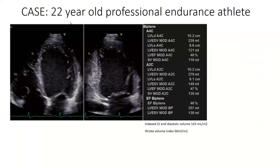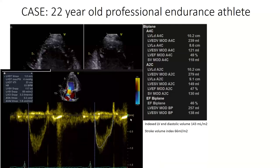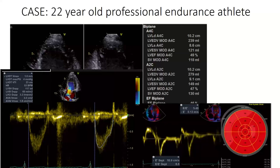If we go back to our case and learn that this 22-year-old is a professional endurance athlete, we can frame the LV dilatation in a different light. We can confirm the same stroke volume by a different method using PW LVOT Doppler — the stroke volume is 60 mls per meter squared, suggesting good tracings. We can then pursue other markers of function, and we see that both tissue velocities as well as strain are indeed normal. So this patient likely has normal systolic function, even though our LVEF is calculating to a low number.